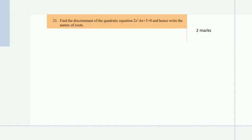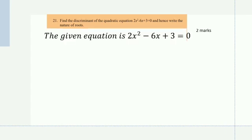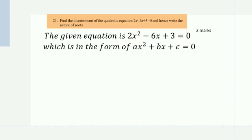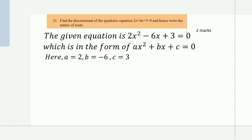Find the discriminant of the quadratic equation 2x² − 6x + 3 = 0 and hence write the nature of the roots. The equation is in the form ax² + bx + c = 0. Here a = 2, b = −6, c = 3. They have asked for the discriminant and also the nature of the roots.